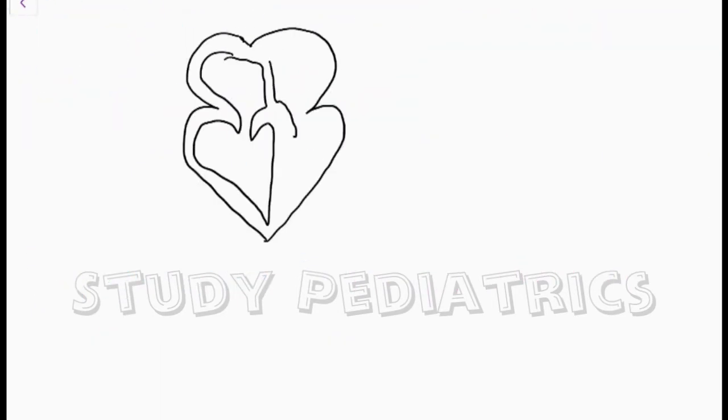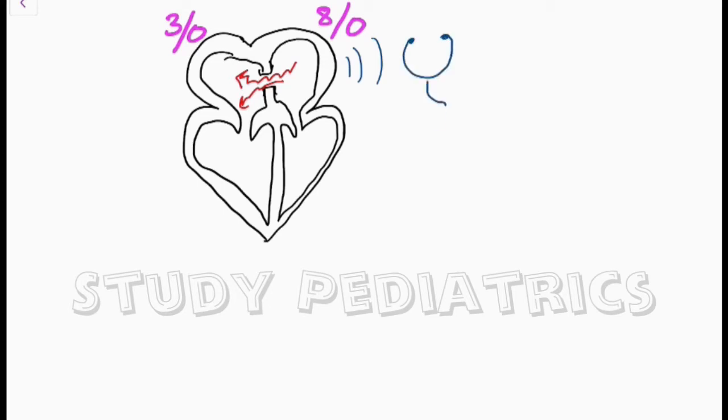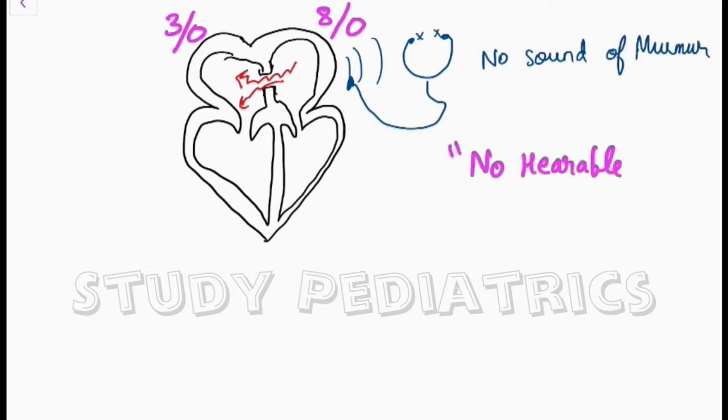Let's go ahead. As you can see, the left atrium has a pressure of maximum 8 and minimum 0, and in the right atrium the pressure is maximum 3 and minimum 0. Hence, the pressure difference is not much to be appreciable by normal ears. Thus, no hearable murmur.